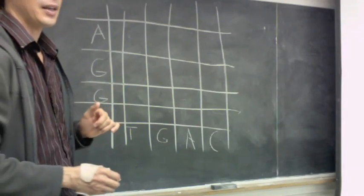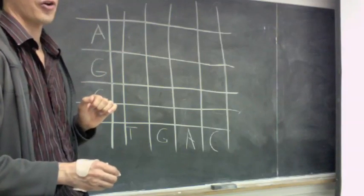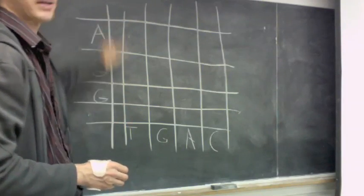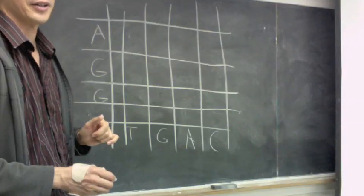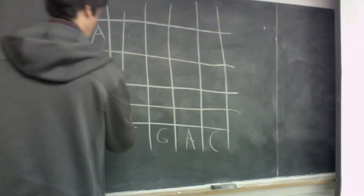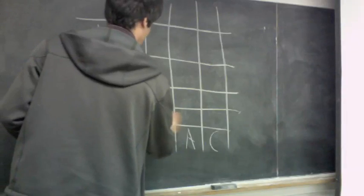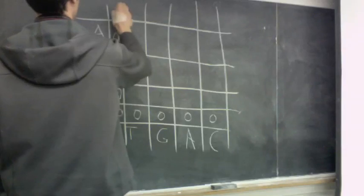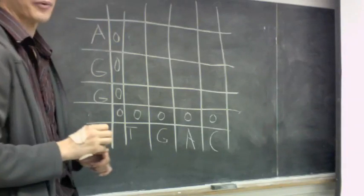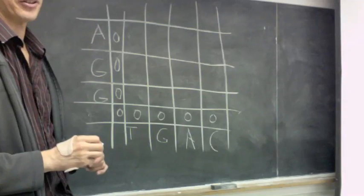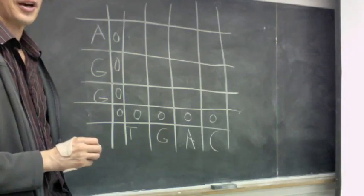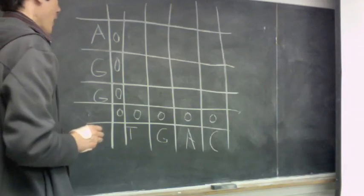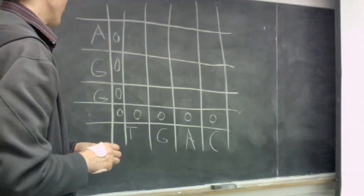You'll recall for the global alignments, we had an initial column and row that represented basically skipping individual letters before we began our alignment. So, again, in line with this start at zero move option, basically, instead of filling in gap penalties here, we're just going to fill in zeros. So, for local alignment, the initial row and column is just zero. Zero, zero, zero, zero. So what that reflects is we're not charging any gap penalty for skipping letters of our initial sequence.